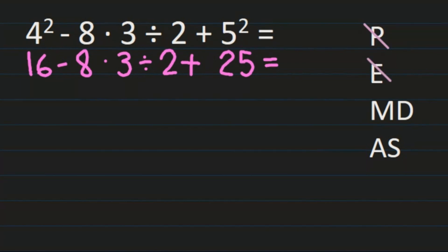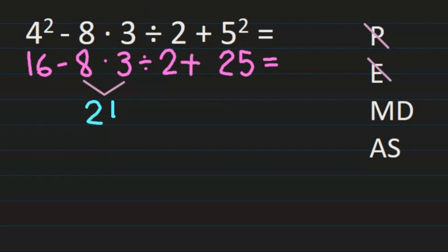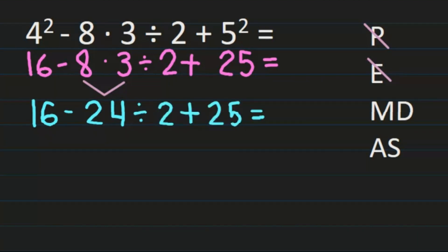I don't have any more exponents, so now I'm on multiplication and division. Remember, I work multiplication and division from left to right. The first place I see multiplication is 8 times 3, so that's what I solve first. 8 times 3 is 24. Bringing down the rest of my problem: 16 minus 24 divided by 2 plus 25. I still have division, so I'm still on that step — 24 divided by 2.